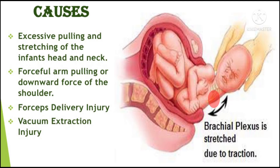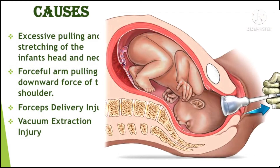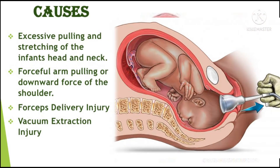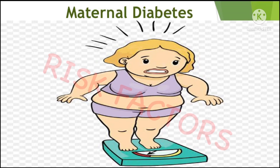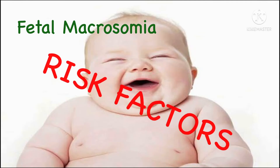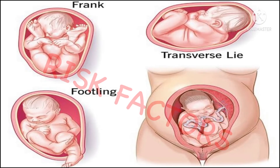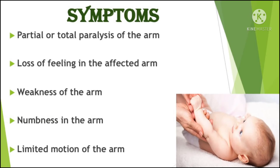Other causes include forceful arm pulling or downward force on the shoulder, force during delivery, and vacuum extraction injury. Risk factors of Erb's palsy include maternal diabetes, fetal macrosomia, shoulder dystocia, and breech delivery.